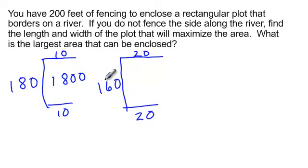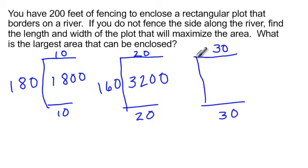What if I decided to make this 30, which of course means this side would be 30? 30 plus 30 is 60. So that would leave me 140 for this side. The area would then be 4,200.